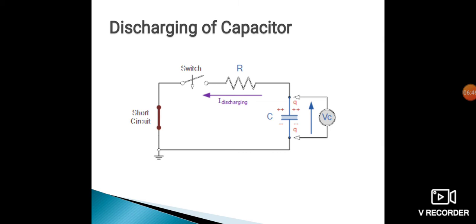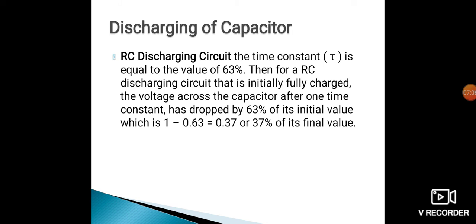Here we have to remove the battery, and in place of the battery, we do a short circuit, because we have to take the charge back from the capacitor. We replace the battery with a short circuit and the remaining circuit remains the same. For the RC discharging circuit, the time constant T corresponds to 63%. For the RC discharging circuit that is initially fully charged, the voltage across the capacitor after one time constant has dropped by 63% of its initial value, which is 1 minus 0.63, that is 0.37 of its initial value.